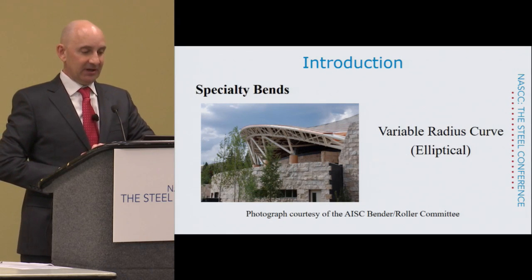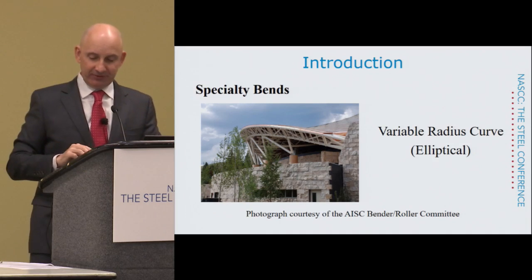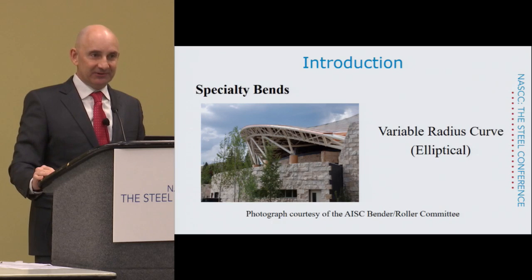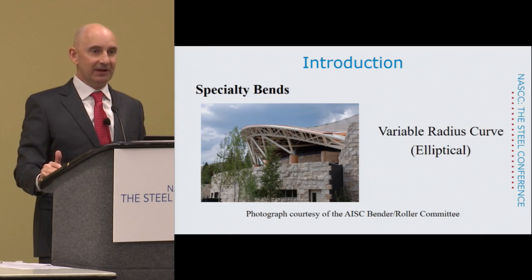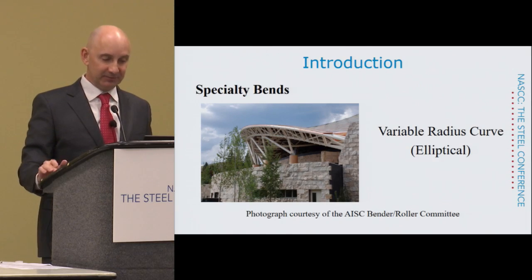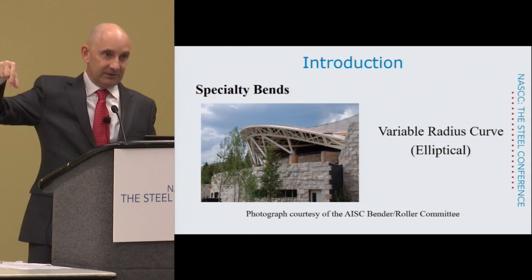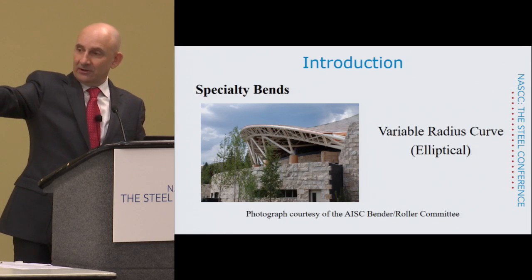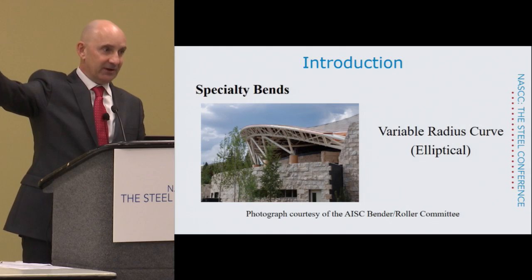Another specialty bend is an elliptical curve. The elliptical and parabolic are known as variable radius curves because they have a variable radius — those aren't the only two; you can have any variable radius curve you want, and the bender rollers can produce it. The two main ones are parabolic and elliptical. This one is elliptical rather than circular: if you look at the plan view it will be a radius, but when you tilt it up at an angle, you have to make the member curved in an elliptical shape.